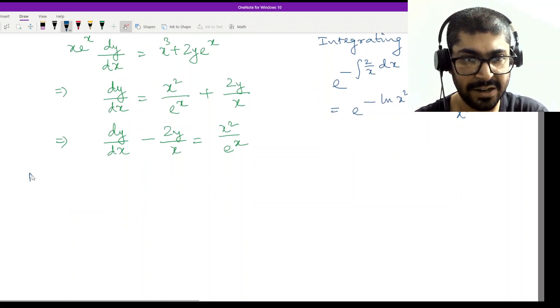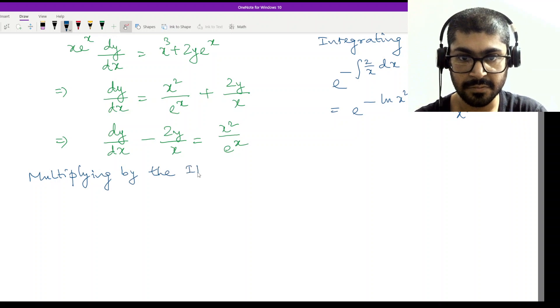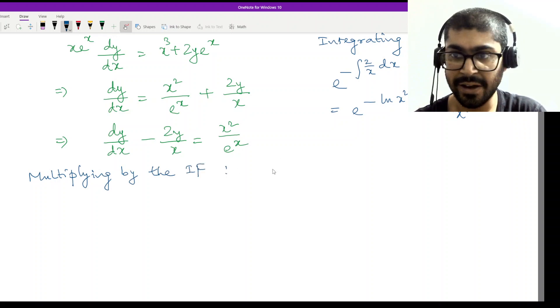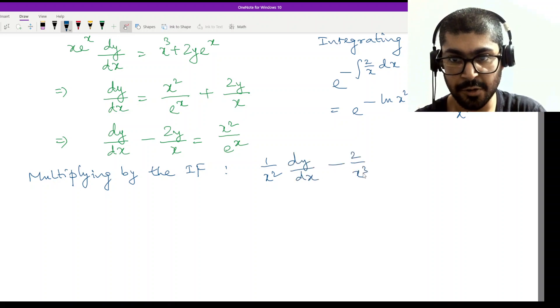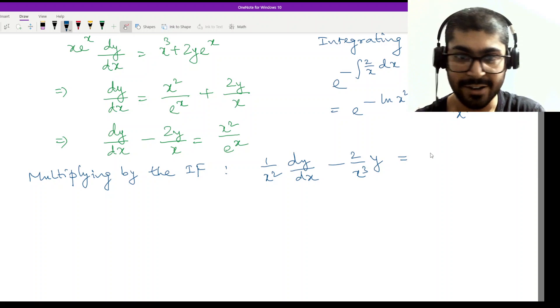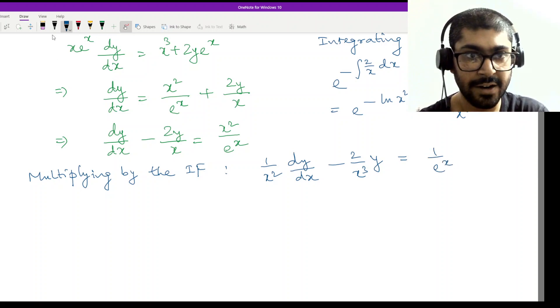So multiplying by integrating factor. Let's do that. We have (1/x²)dy/dx - (2/x³)y equal to, x² gets cancelled out, and I just end up with 1/e^x.